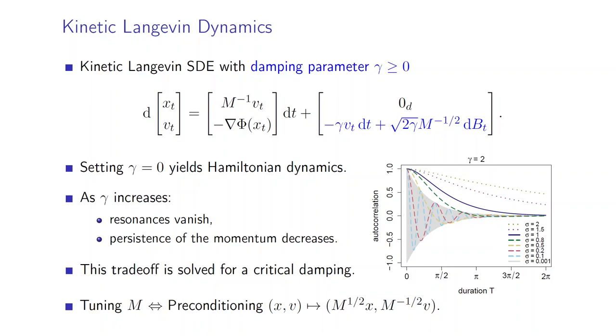This trade-off can be solved for a critical value of damping, and we see on the right-hand side for the toy Gaussian model that all the autocorrelation functions are controlled by the one of the reference scale σ = 1 for all the scales that are lower than this scale.